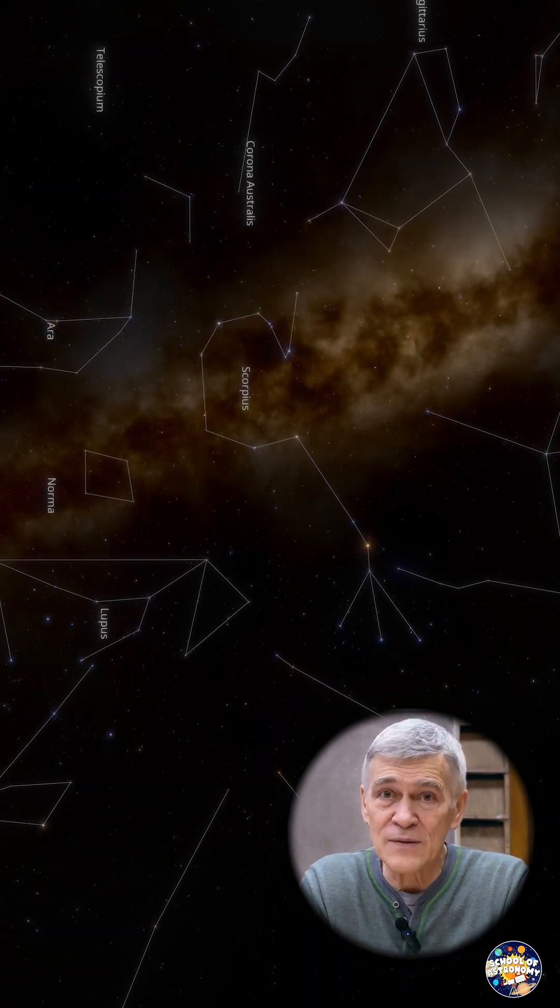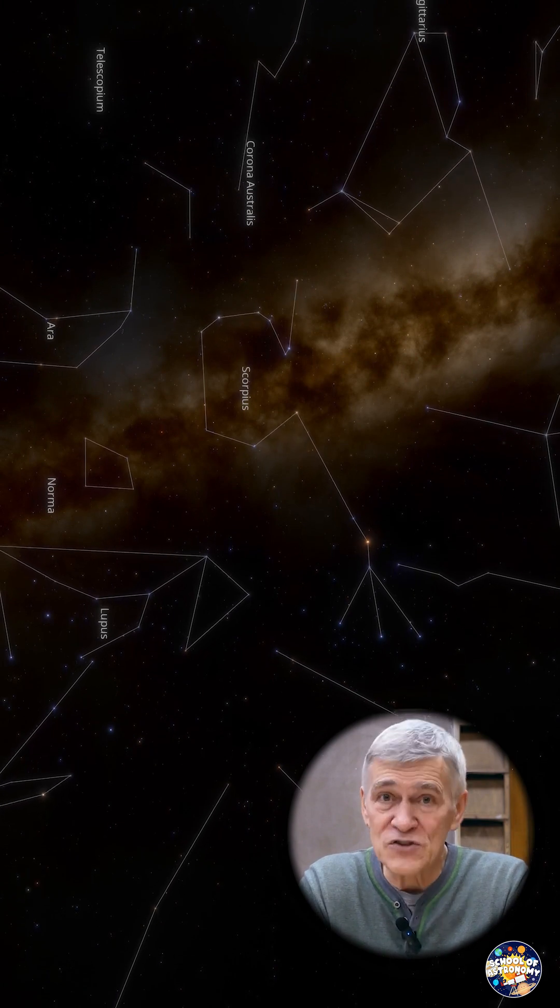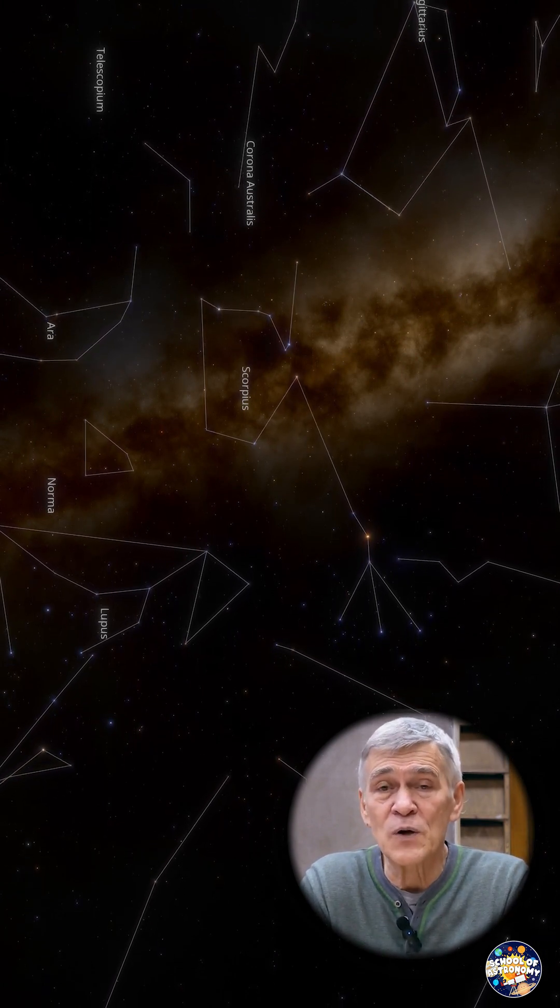So the stars are flying, the configuration of constellations is changing, but it happens slowly because the stars are far away from us.